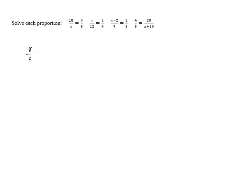18 over x equals 9 fifths. Now, the easiest way to solve a proportion is using cross multiplication.